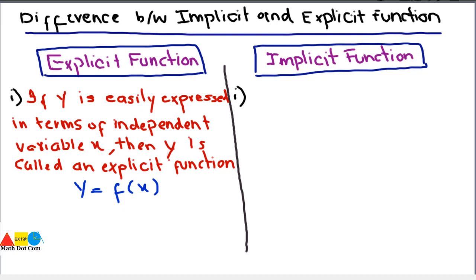If we can write the function in a way that y is separate and x is separate, both of the variables are separated from each other, then we can say that the function is explicit and there are no complex terms involved. For example, we have y equals x squared plus 3x minus 2.